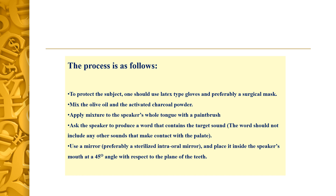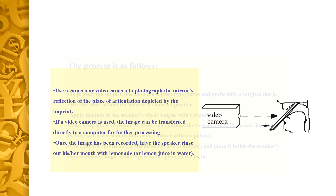The word should not include any of the sounds that may contact with the palate. Use a mirror — preferably a sterilized intraoral mirror — placed inside the speaker's mouth at a 45-degree angle with respect to the plane of the teeth. Use a camera to photograph the mirror's reflection of the place of articulation depicted by the imprint. If a video camera is used, the image can be transferred directly to a computer for further processing.